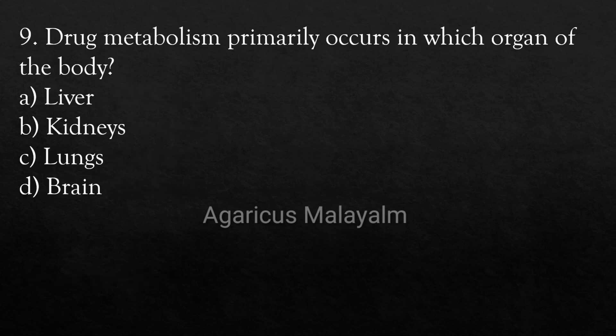Question 9: Drug metabolism primarily occurs in which organ of the body? Option A: Liver, Option B: Kidneys, Option C: Lungs, Option D: Brain. Correct Answer: Option A — Liver.